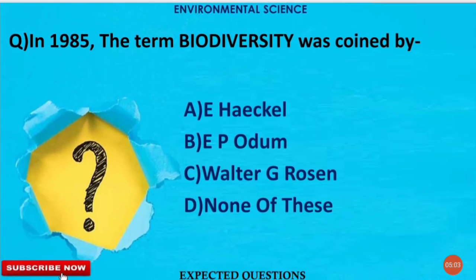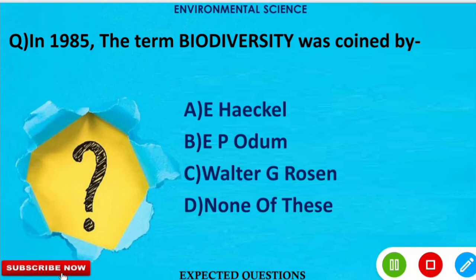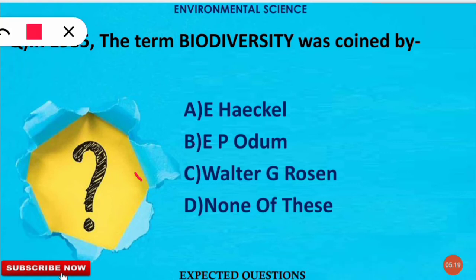The next question is: in 1985, the term biodiversity was coined by which of the following? The correct option is C — Walter G. Rosen coined the term biodiversity in 1985.